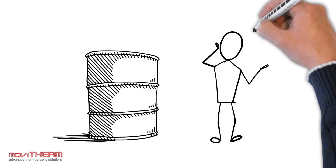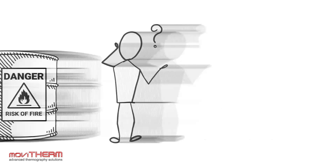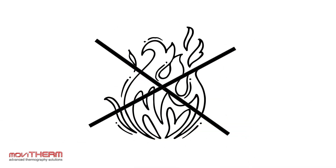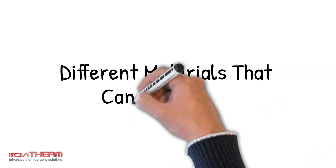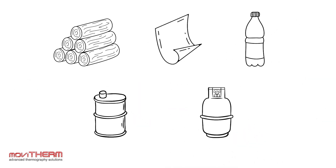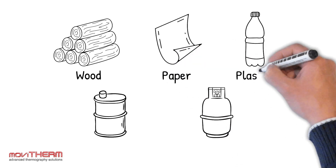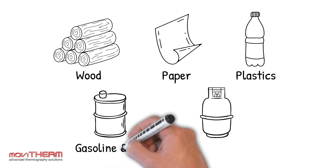Understanding these different types of materials and combustion modes can help you better understand the fire risks and take steps to prevent them from occurring. First, let's talk about the different materials that can catch fire. These include solid materials such as wood, paper, and plastics, and liquid materials such as gasoline and oil.